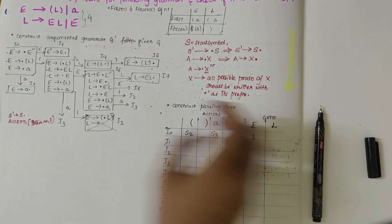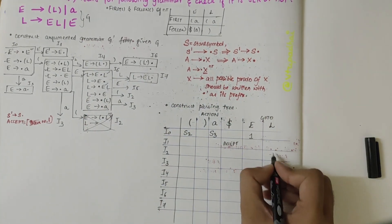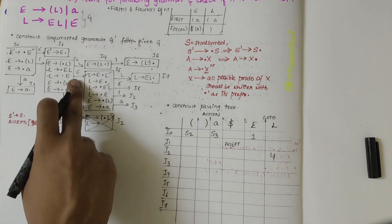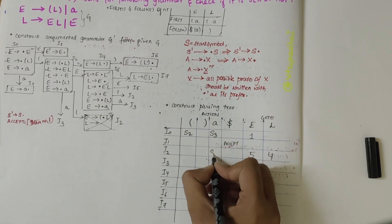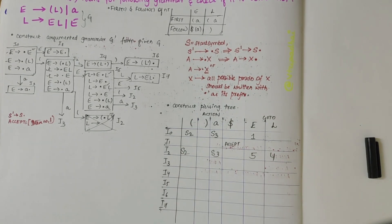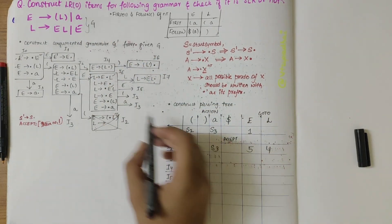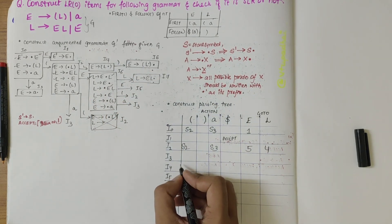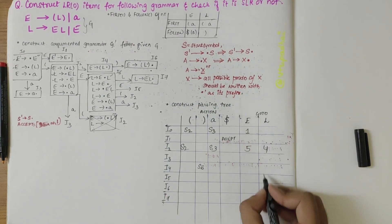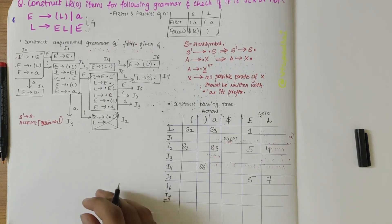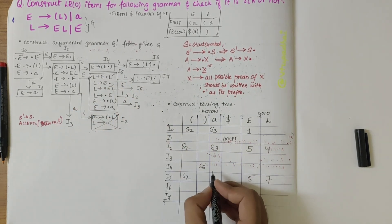For I2: over L you get I4, so write 4 under goto L. I2 over E you get 5 under goto E. I2 over A, write S3. I2 over open bracket, write S2. For I4: over close bracket I get I6, so write S6. For I5: over L write 7, over E write 5, over open bracket write S2, and over A write S3.